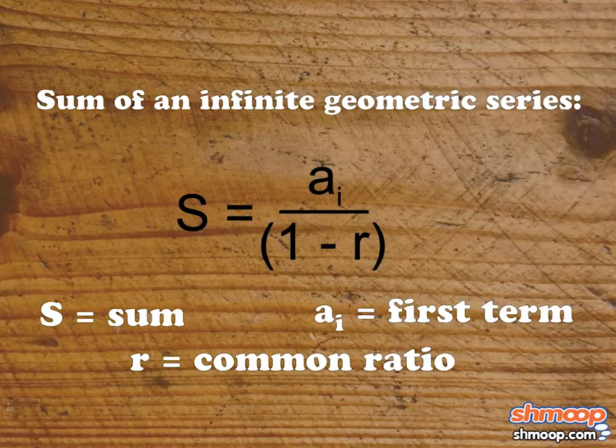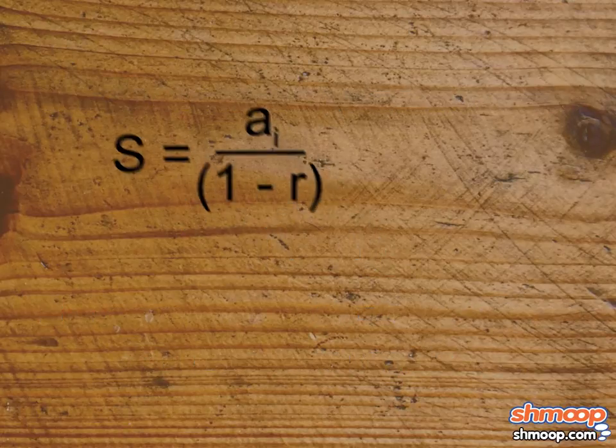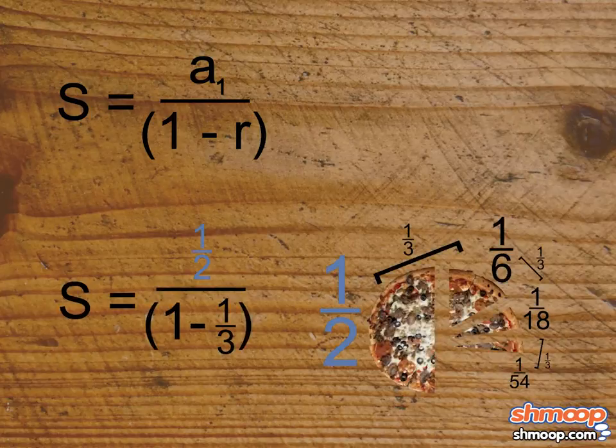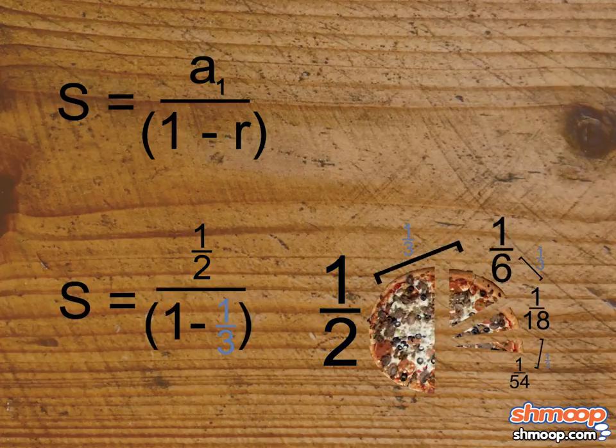Let's see how this bakes out. Substituting our pizza values into the formula, we see that the sum will equal one-half divided by the quantity one minus one-third. One minus one-third equals two-thirds.